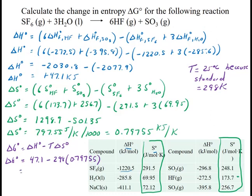So my delta G° is going to be my delta H, which is 47.1 minus 298 times 0.79755. When I do that math, I get a negative 190.6 kilojoules. I'm going to go ahead and stop here. On the next slide, I have another problem, but that will be the next video.